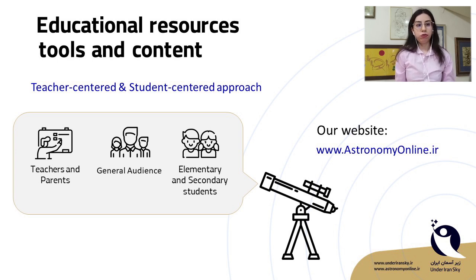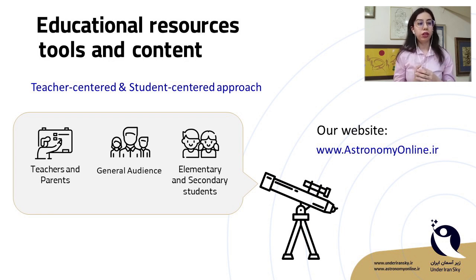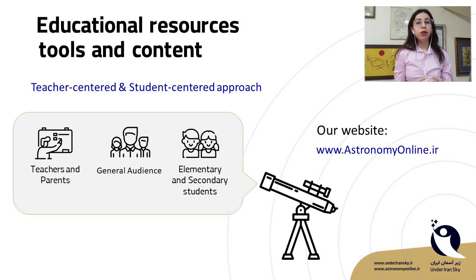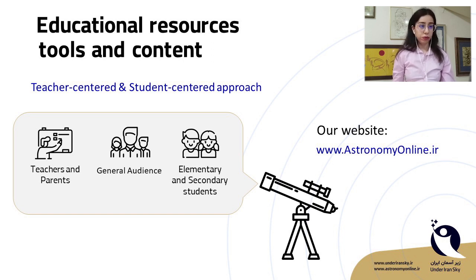In our initial months, we focused on getting advice and recommendations from people professionally educated in education, in order to know how to engage the public during the pandemic with astronomy. As a result, we decided to use both teacher-centered and student-centered approaches. We also divided our audience into three groups — elementary and secondary students, teachers, and general audience — so they can be motivated in different ways through our social media and website.